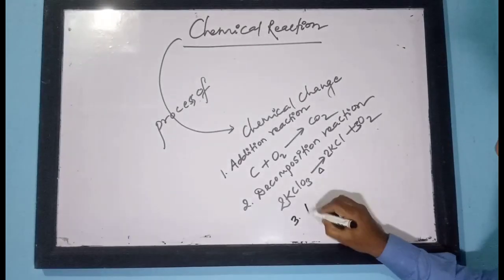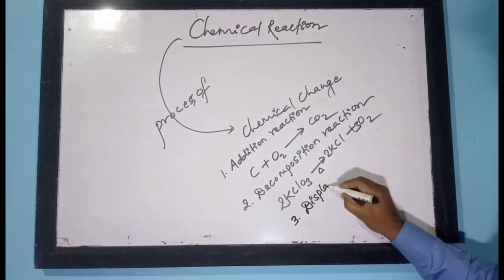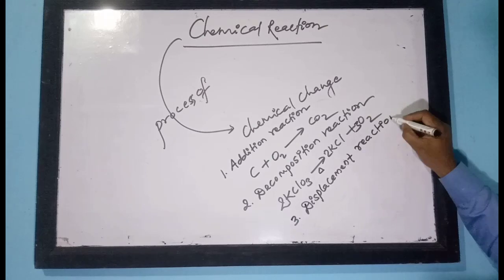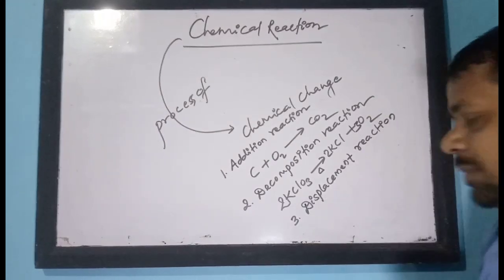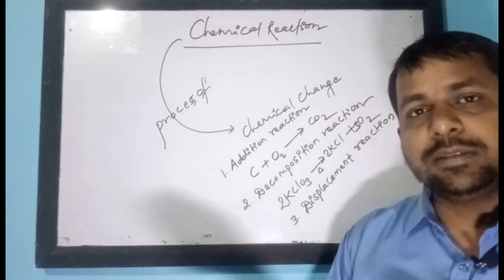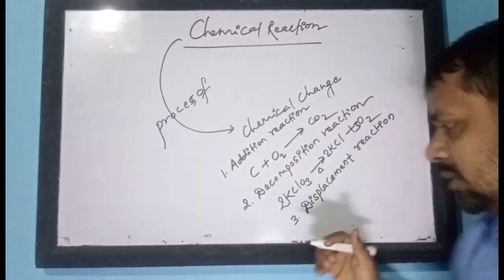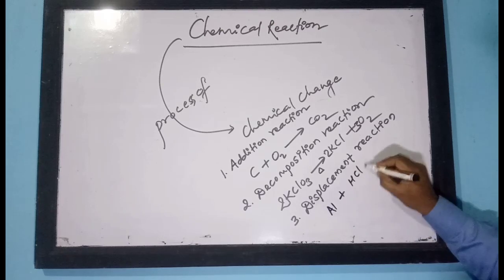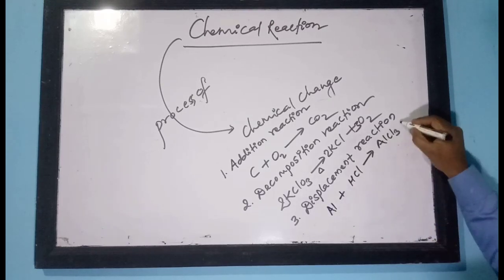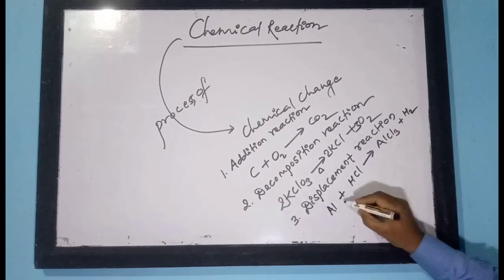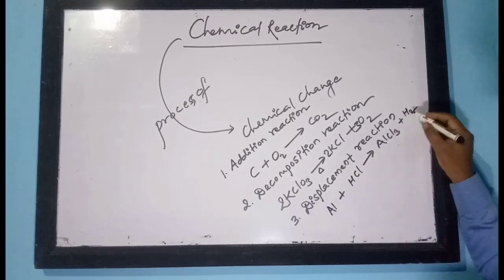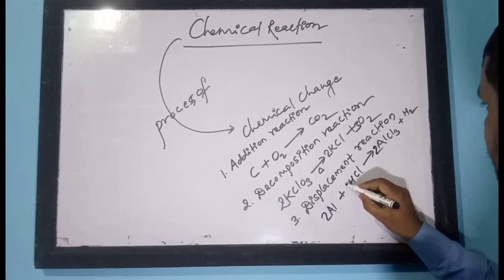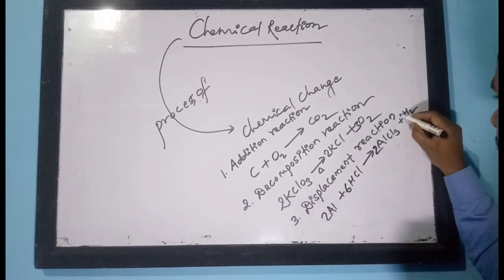The third way a chemical reaction can occur is by displacement, and that reaction is called a displacement reaction. Displacement can occur in two ways: single displacement and double displacement. For example, aluminium reacts with HCl to form AlCl₃ plus H₂. We balance it with coefficients of 2 and 6.